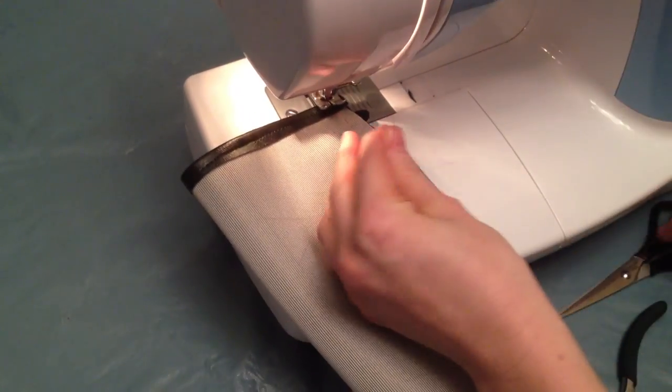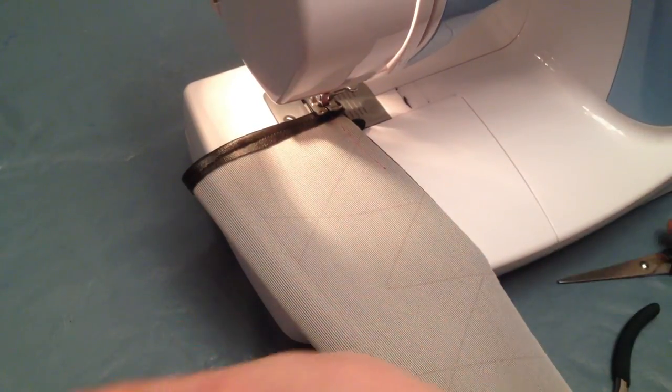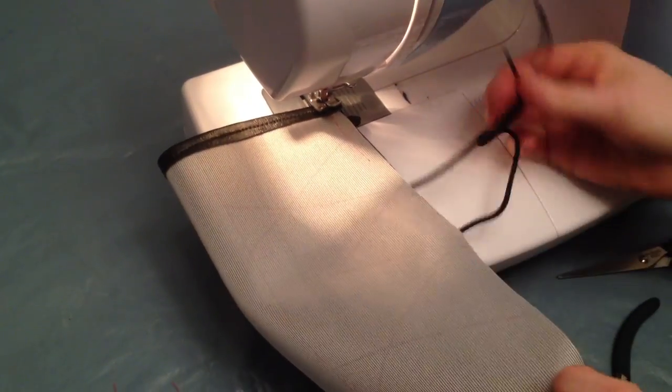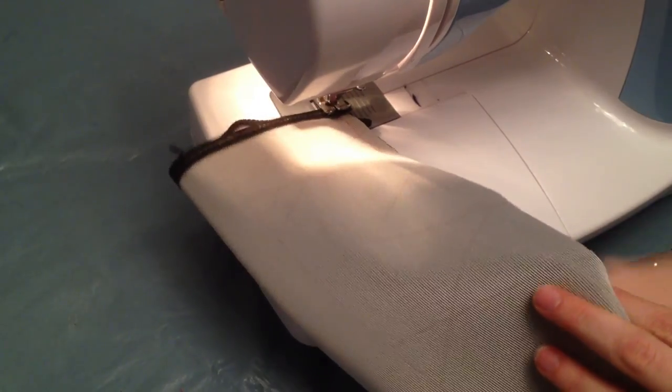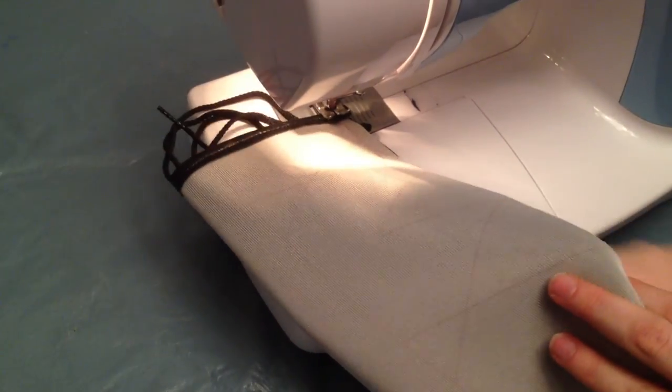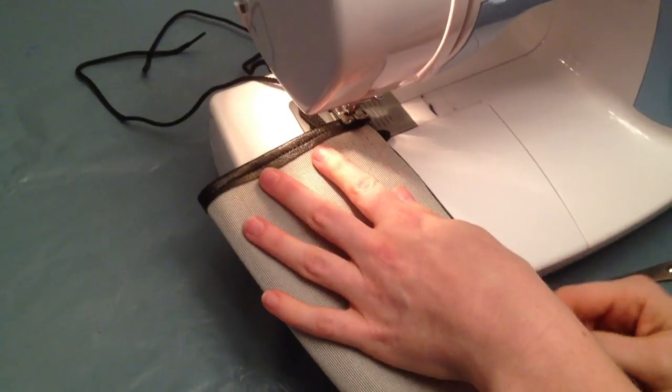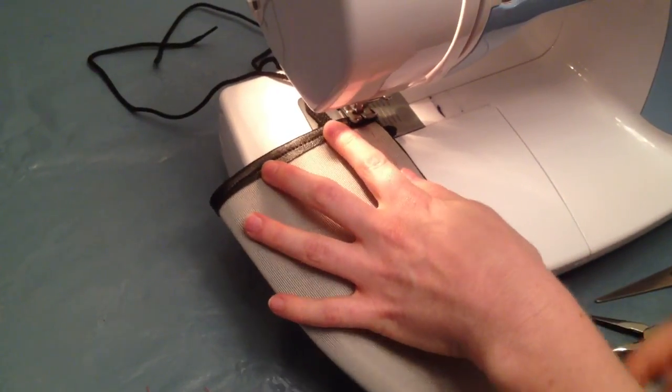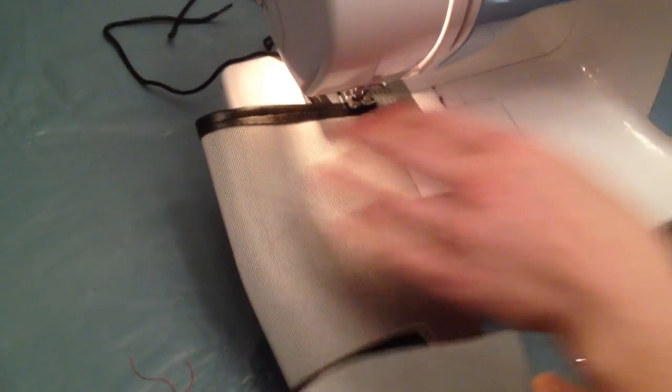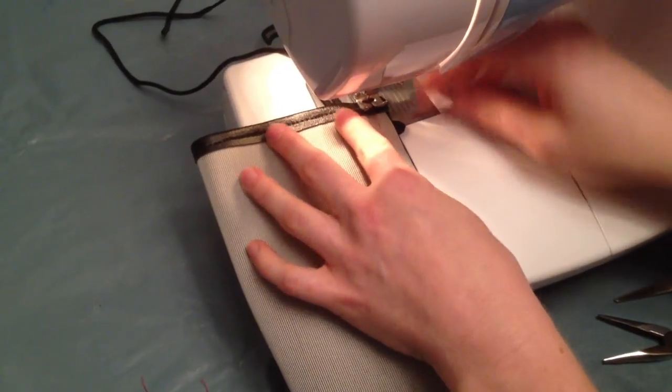At the same time I do that, I'm going to cut off these edges so they don't get in my way, and I'm going to take the shoestring, push it through the top again so I don't sew over it. Then lower our foot and start sewing.